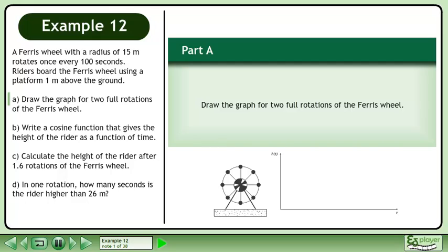A Ferris wheel with a radius of 15 meters rotates once every 100 seconds. Riders board the Ferris wheel using a platform 1 meter above the ground.